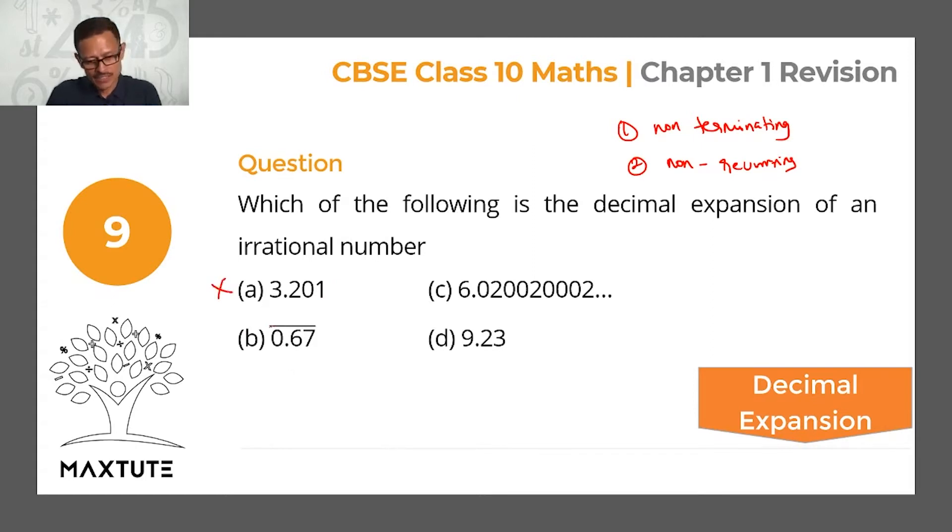0.67 with that line on top, the bar on top, which essentially means that this number is 0.676767. It is non-terminating, good, but it is recurring. So it's obviously not an irrational number.